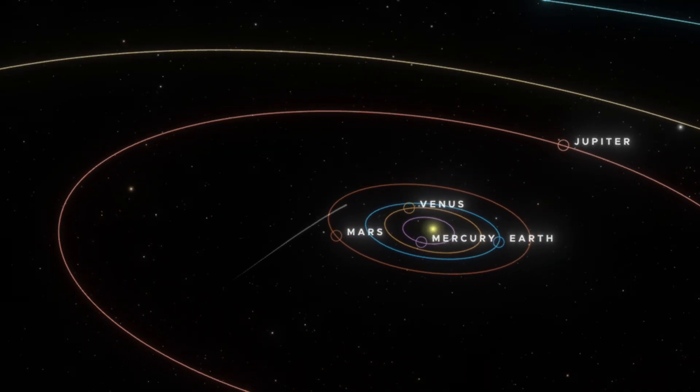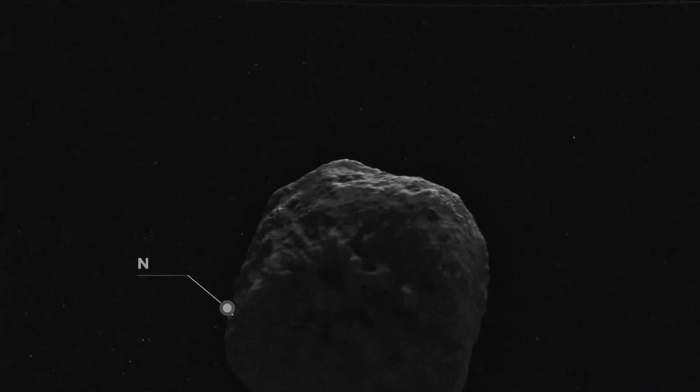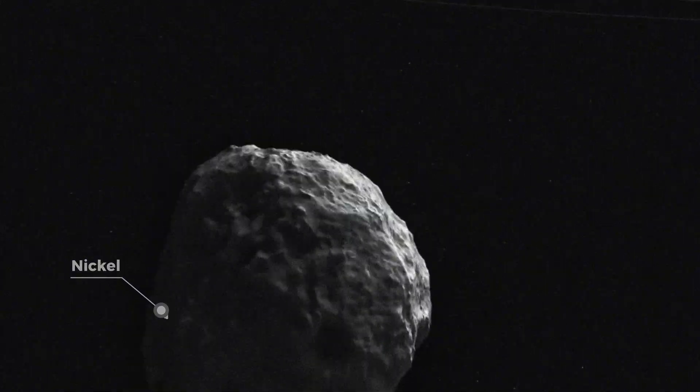The first object, 3I Atlas, isn't behaving like any comet we've ever seen. It's made of pure nickel metal without a trace of iron, something that's extremely rare in natural space objects.